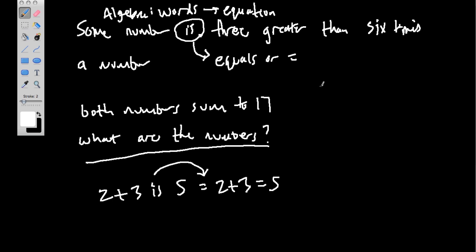So we have some number, let's call it x. Is 3 greater than, here's another key phrase, greater than. This can be thought of as addition. So 3 greater than what? 6 times a number. So now there's another number. 6 times a number, where 'times' refers to multiplication. So we have some number is 3 greater than 6 times another number. That's our first relationship.